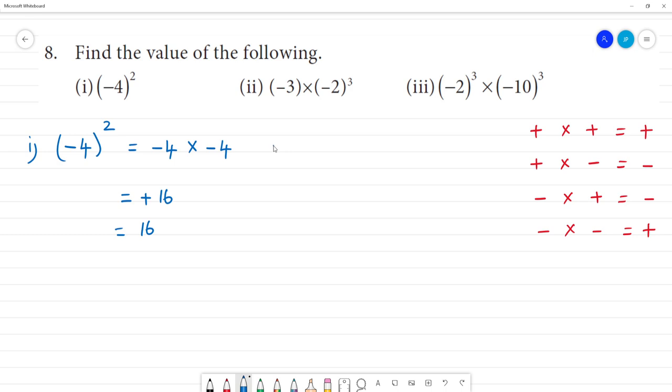Now the second one. What's given there? Minus 3. Now, minus 2 multiplied by minus 2 multiplied by minus 2 multiplied by minus 2. Let's multiply the signs. How many signs are there? 4 times.